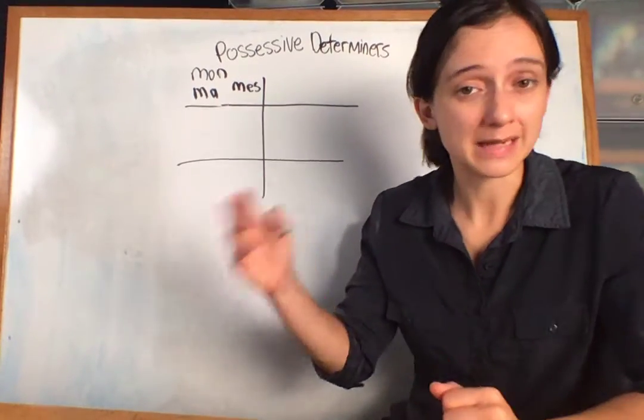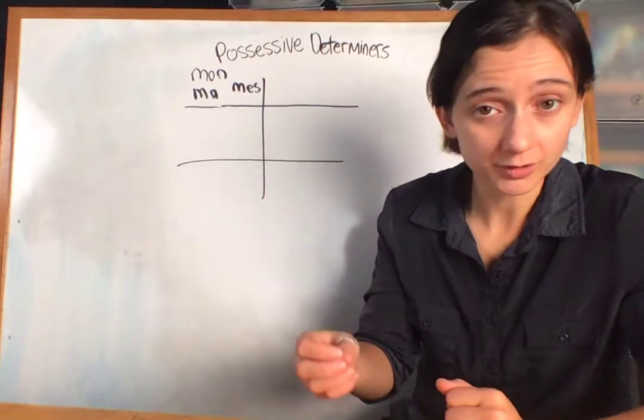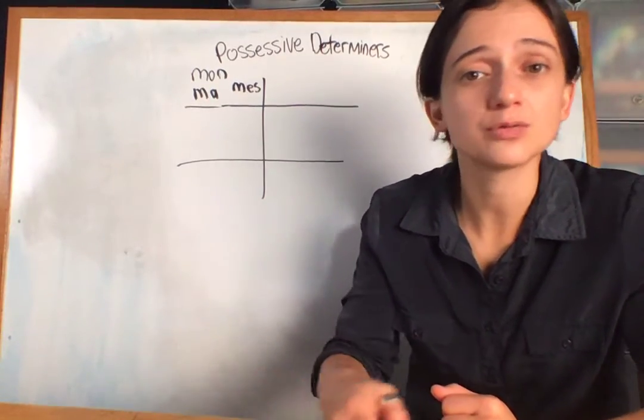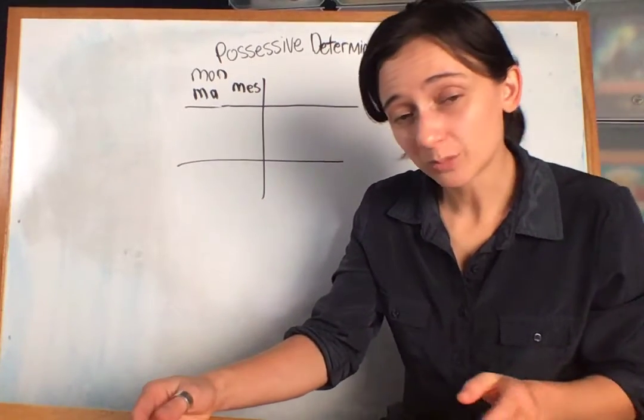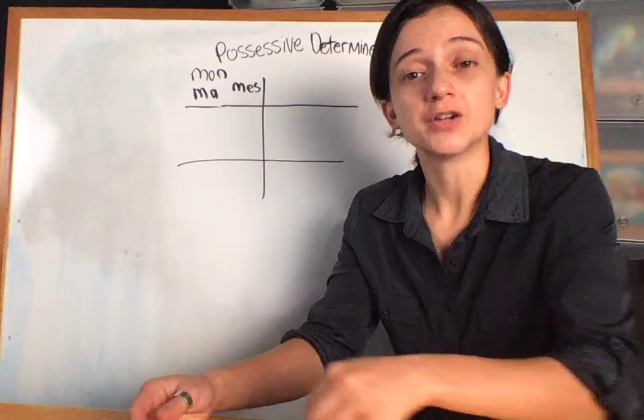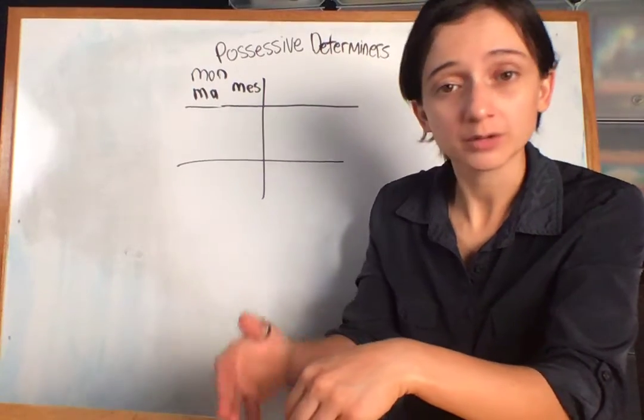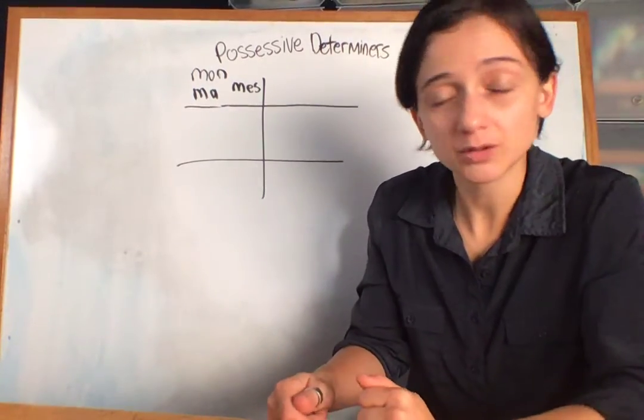If it was masculine and you needed a definite article, you need to use le. Feminine, you use la, or un, or une. They have to agree or match the gender and number, like singular or plural, of the noun that it goes with.